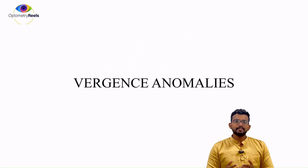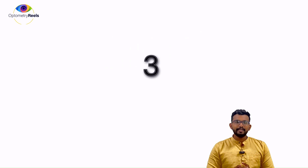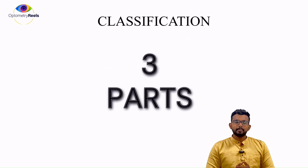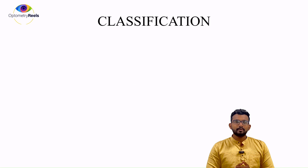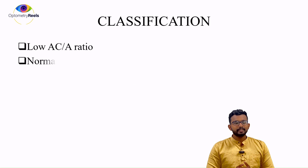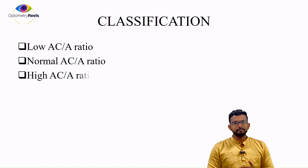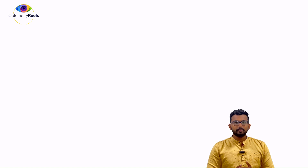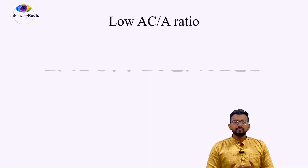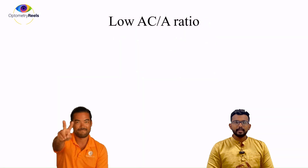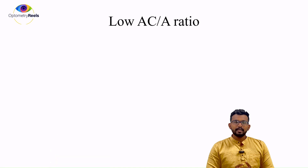In convergence anomalies we are going to divide into three parts. The first part we are talking about AC/A ratio will be low. The second part the AC/A ratio will be normal, and the third part there will be high AC/A ratio. First we are going to talk about the insufficiencies — low AC/A ratio — where we are having two categories: convergence insufficiency and divergence insufficiency.